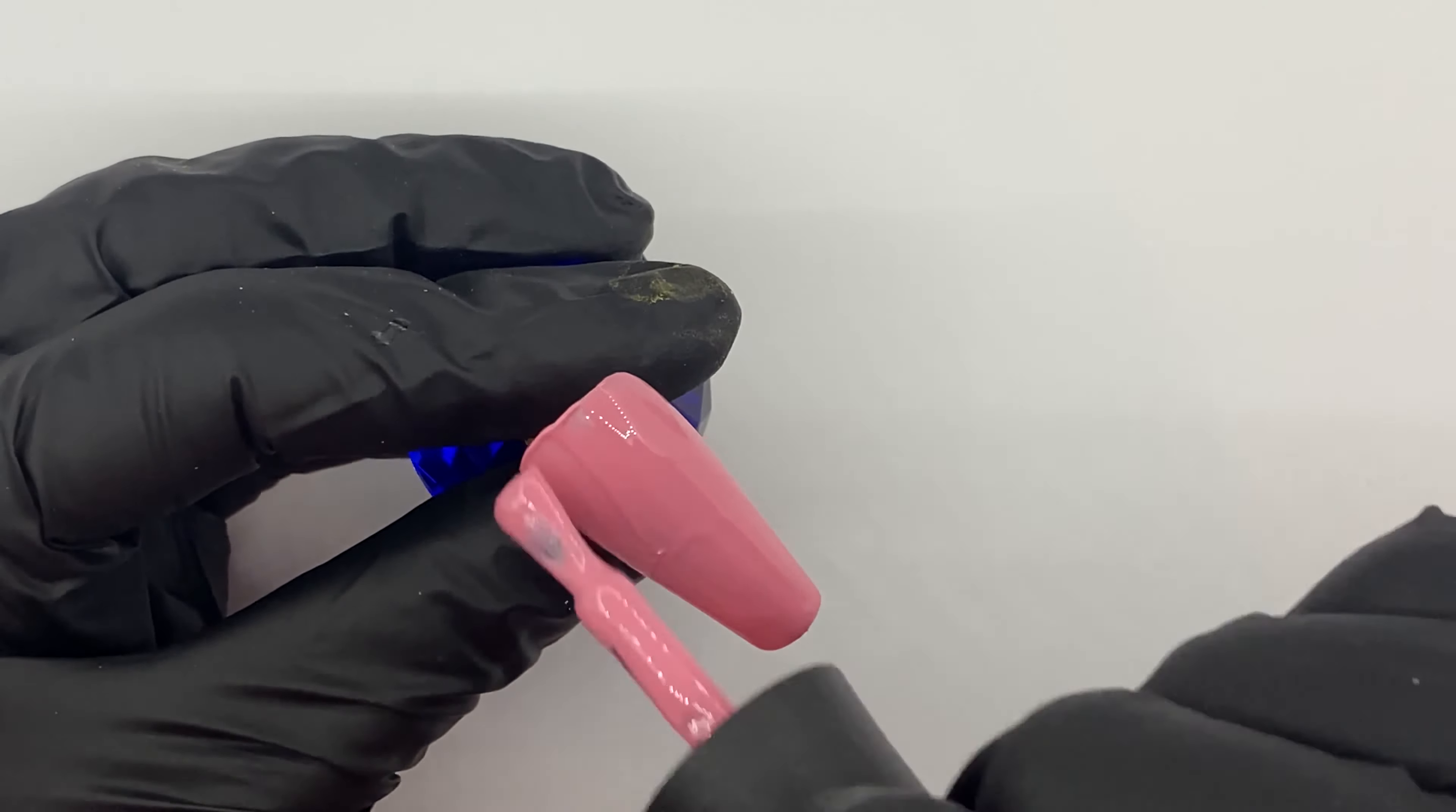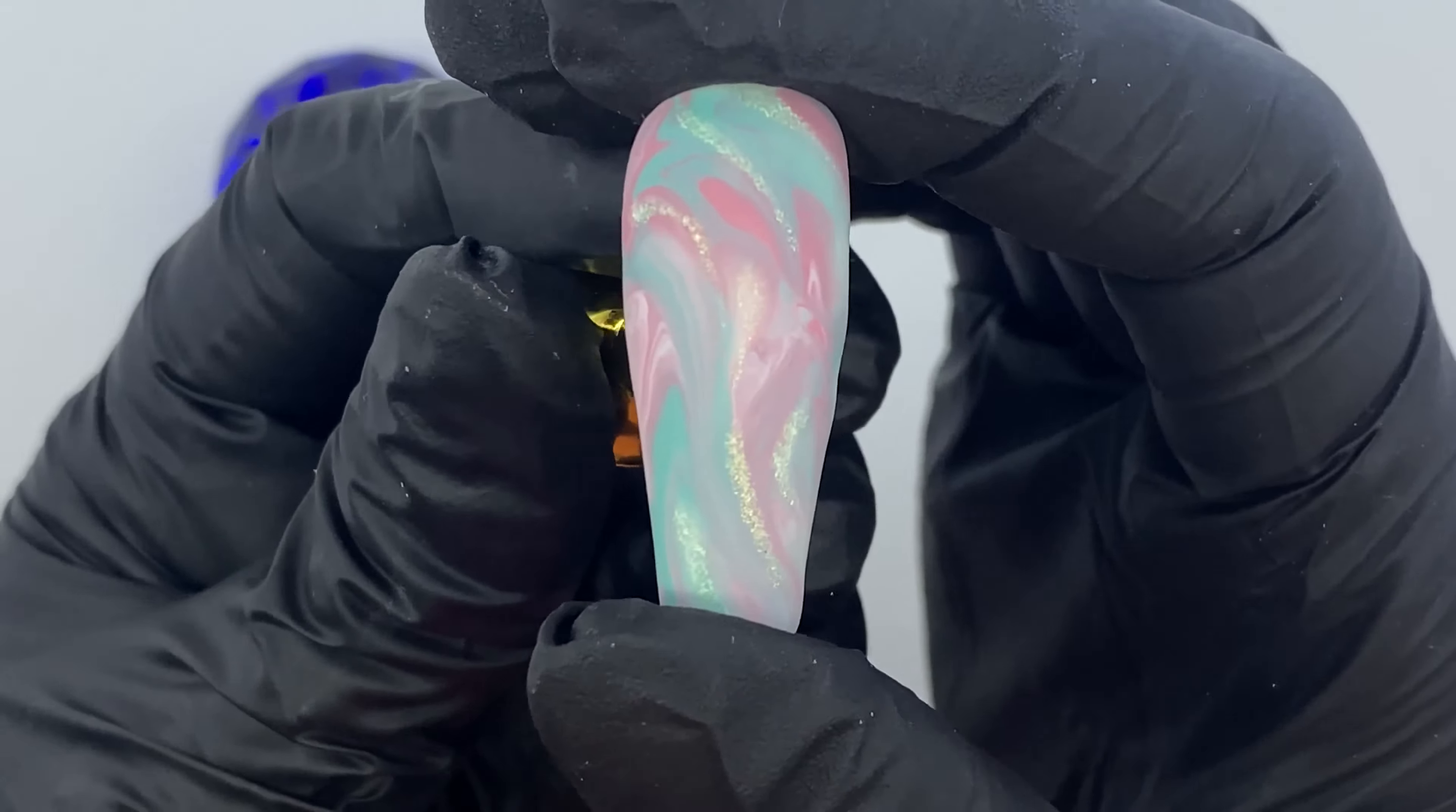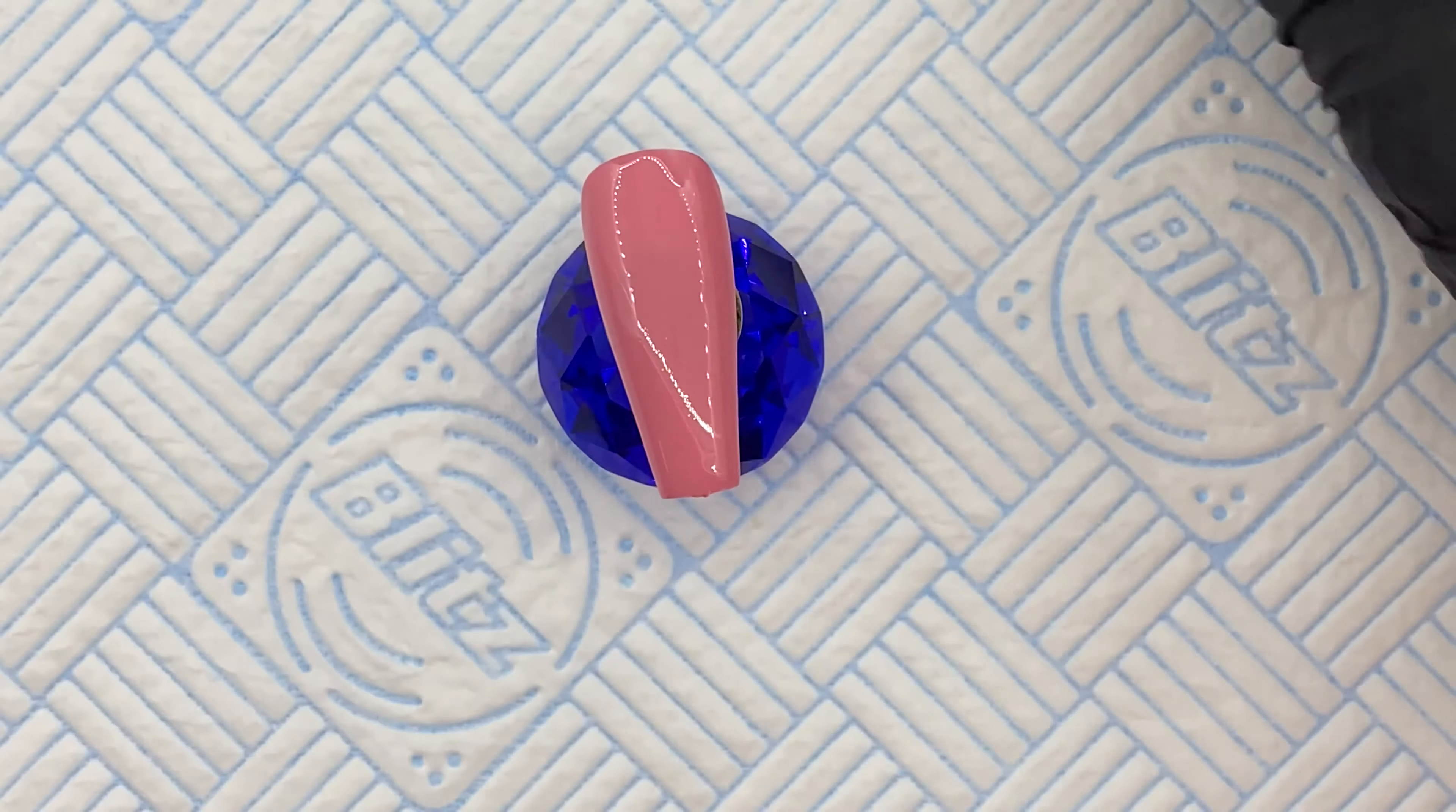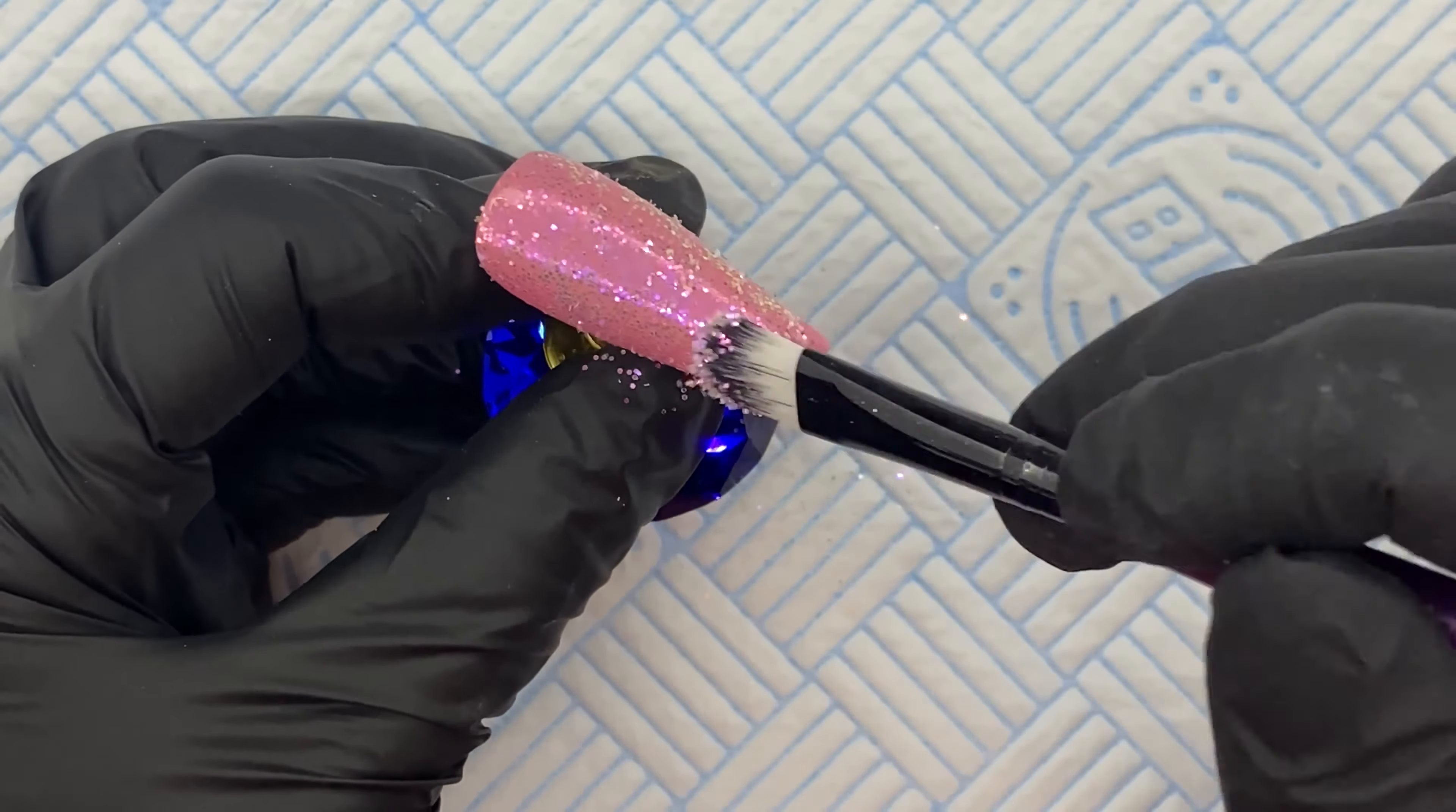This is where I use the glitter pixels - they're absolutely stunning. Here's the glitter pixels in Atomic. Now they don't come in separate ones anymore, they're all in one pot so they're now called Princess Pixels, which is still just as stunning. Honestly you need these in your life. Now I'm just dabbing it into the tacky layer, giving it a good rub.